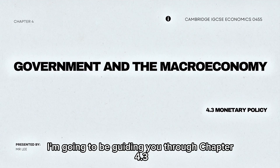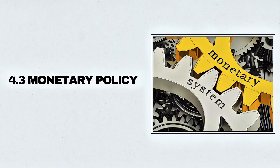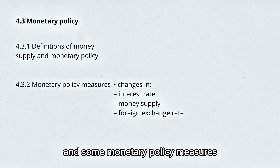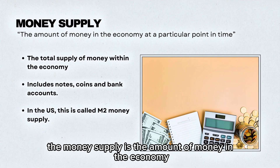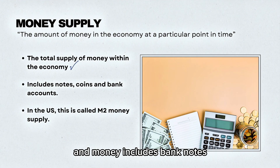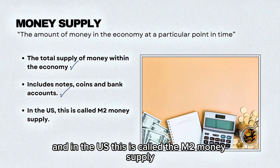In this video, I'm going to be guiding you through Chapter 4.3, Monetary Policy. Firstly, we will look at some definitions and some monetary policy measures. The money supply is the amount of money in the economy at any particular point in time, and money includes banknotes, coins, and bank accounts. In the US, this is called the M2 money supply.